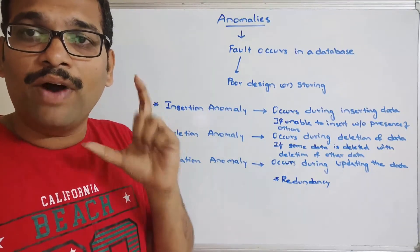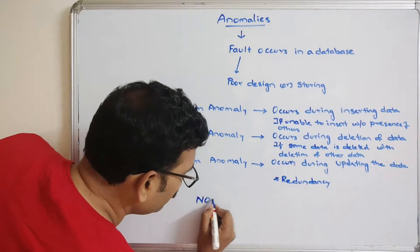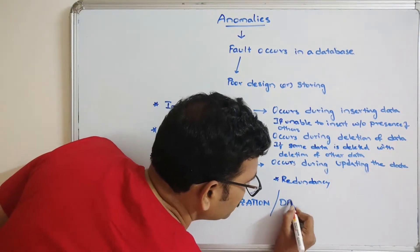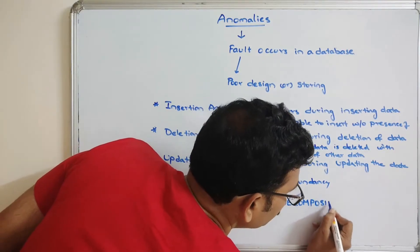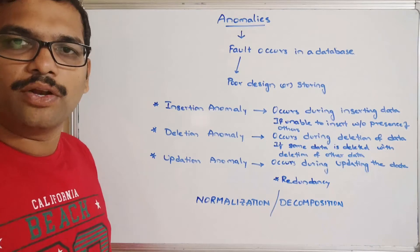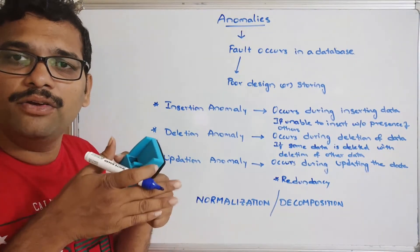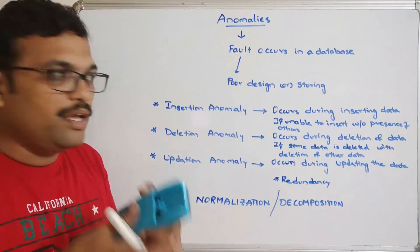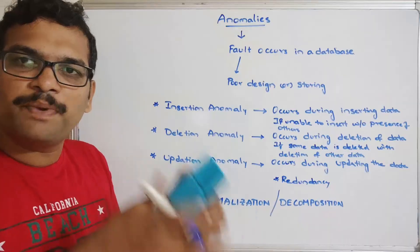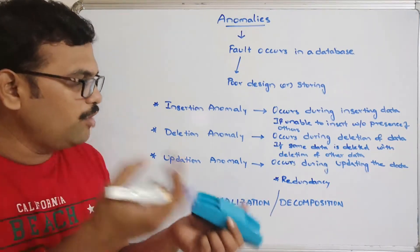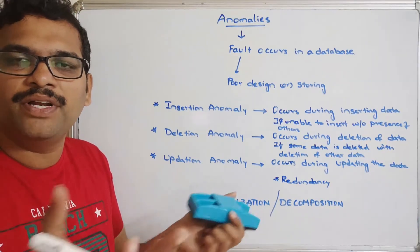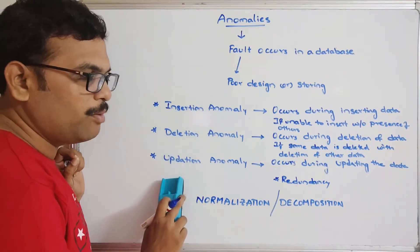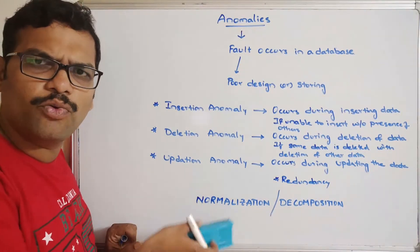The only way to avoid these anomalies is by going with normalization, which we can also call decomposition — specifically lossless decomposition. Decomposition means dividing the table into different sub-tables, and splitting and joining are both part of normalization. We split the tables and create relationships between them to avoid anomalies.